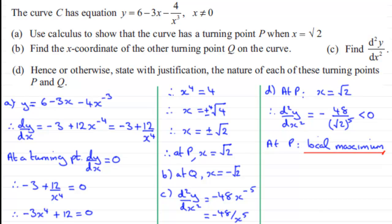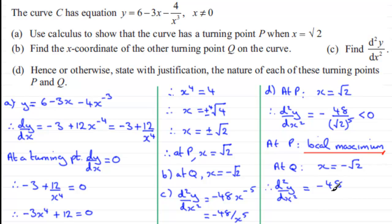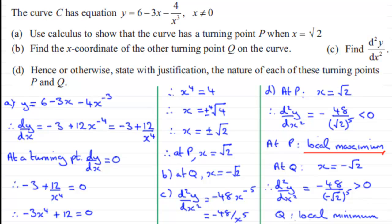Now for turning point Q, at Q we test x equals negative root 2. Substituting into d²y/dx² gives minus 48 divided by negative root 2 to the power 5. A negative number raised to an odd power is negative, so we have minus 48 over a negative number — negative over negative gives positive, greater than zero. Therefore Q is a local minimum.